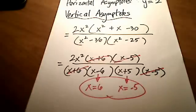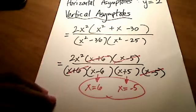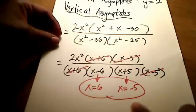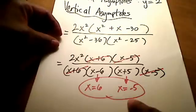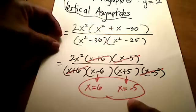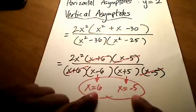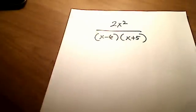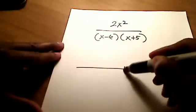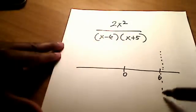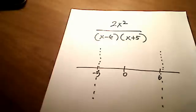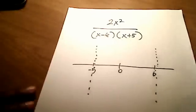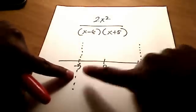Now, if your homework or math lab asks one more thing out of this problem, it wants to know what the function is doing as we approach these two vertical asymptote values coming from either side. Let me write the simplified form of the function. The simplified denominator is (x − 6)(x + 5), so we want to analyze the behavior as we approach each asymptote from the left and from the right.